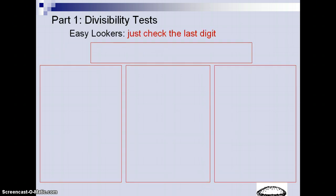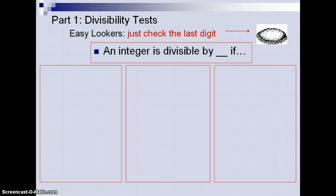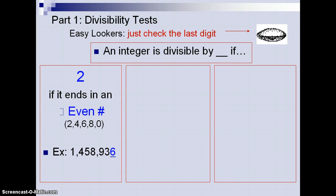First, we'll talk about the divisibility rules. This is a chart where we check the last digits. If an integer can be divided by 2, then it would end with an even number, such as 2, 4, 6, 8, or 0. For example, 1,458,936 can divide by 2 because of that last digit, 6.